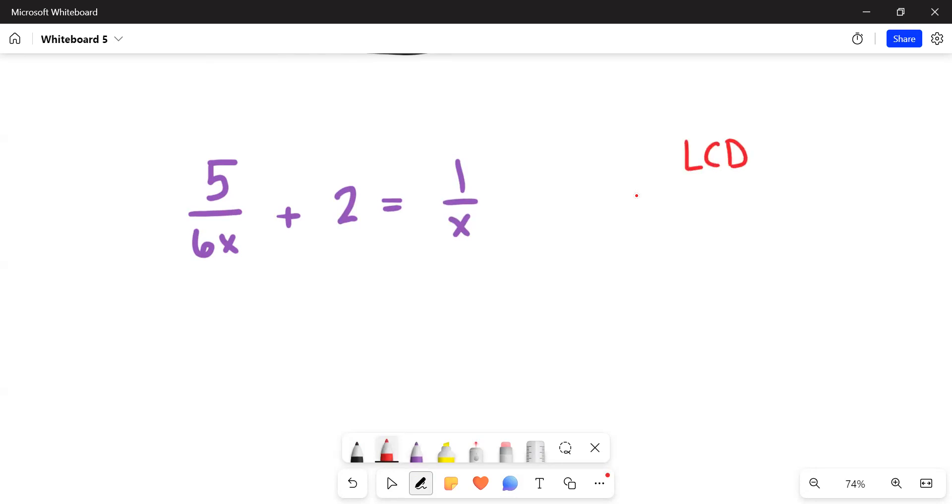The least common denominator can be found by looking at the denominators six x and x. And the two has an unwritten denominator, it could be thought of as two over one. So the least common denominator itself is six x. We're going to multiply both sides of this equation by six x, multiplying the left hand side and the right hand side by six x.